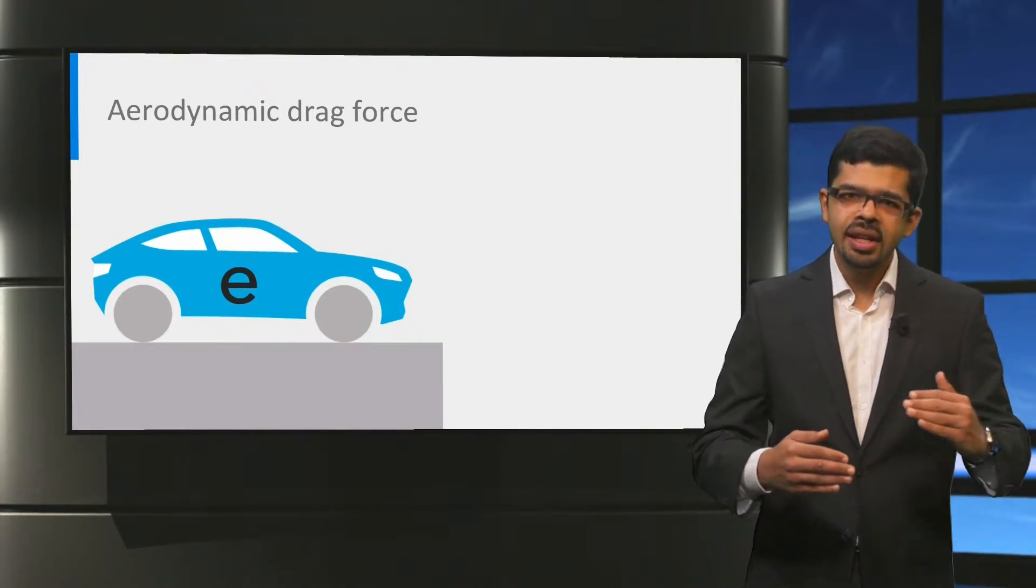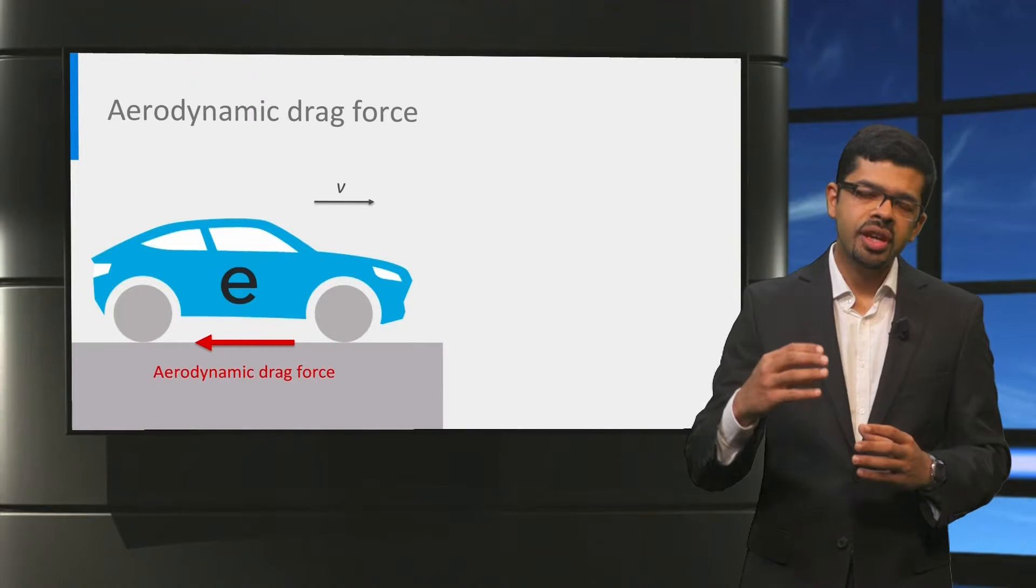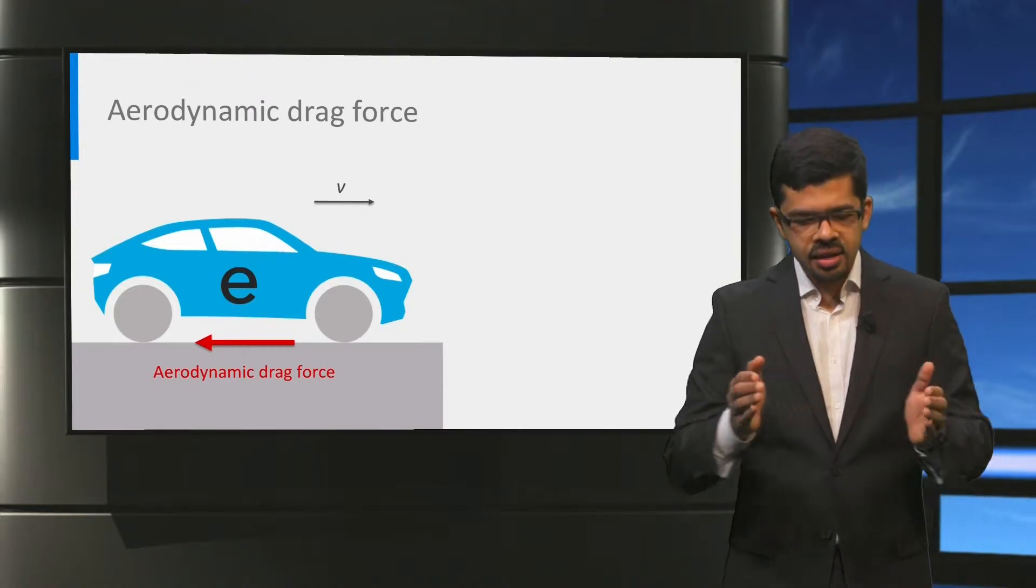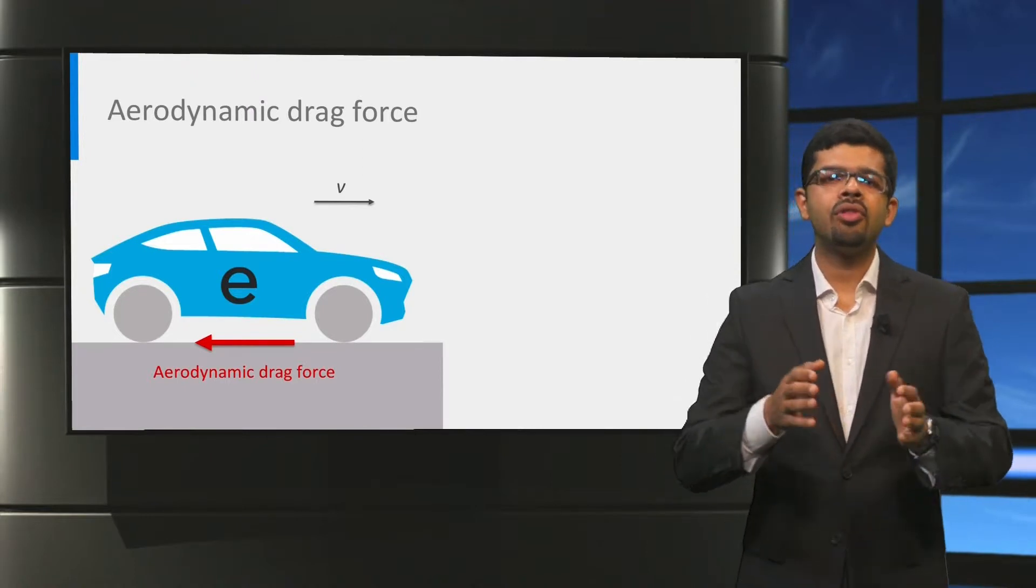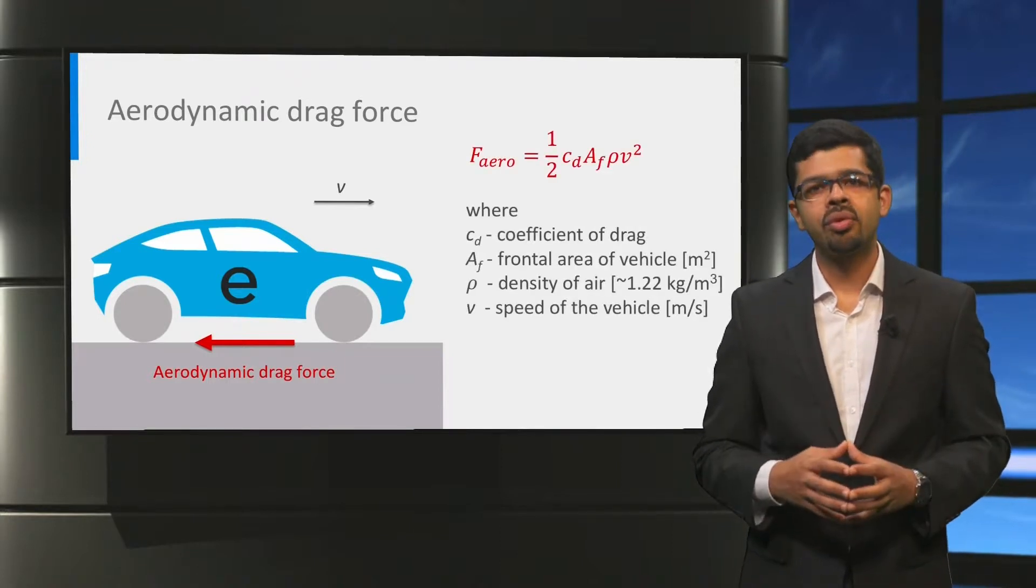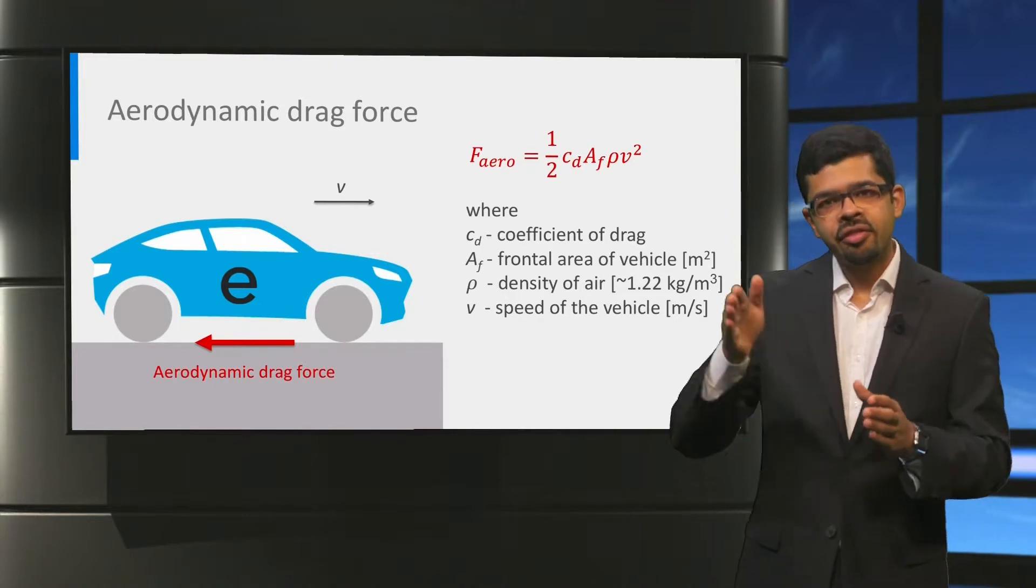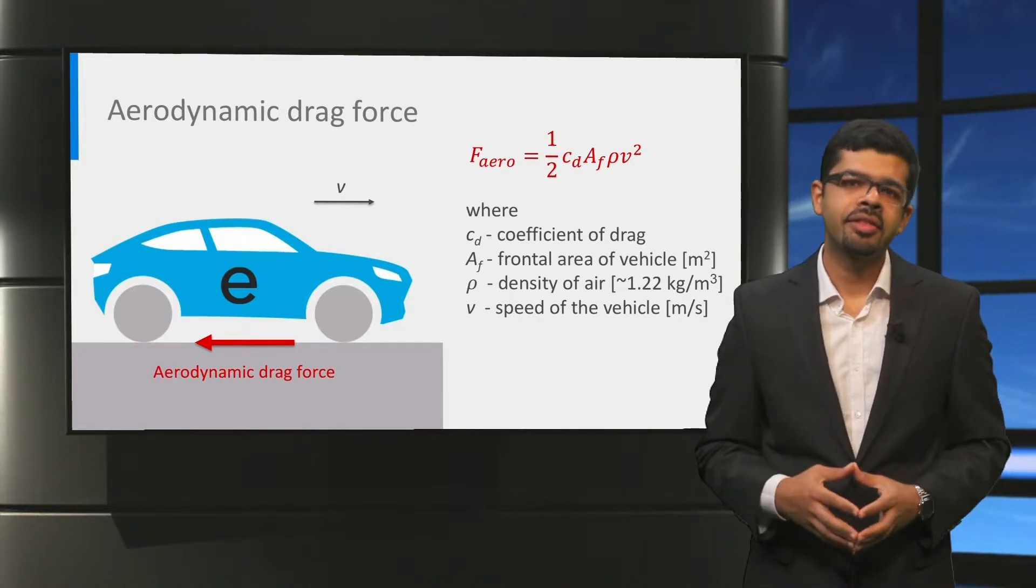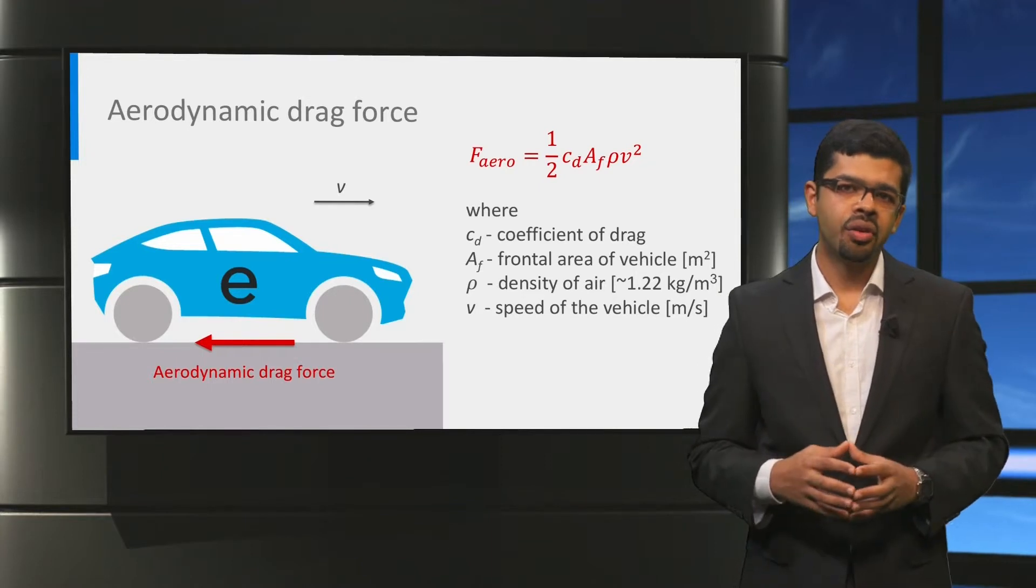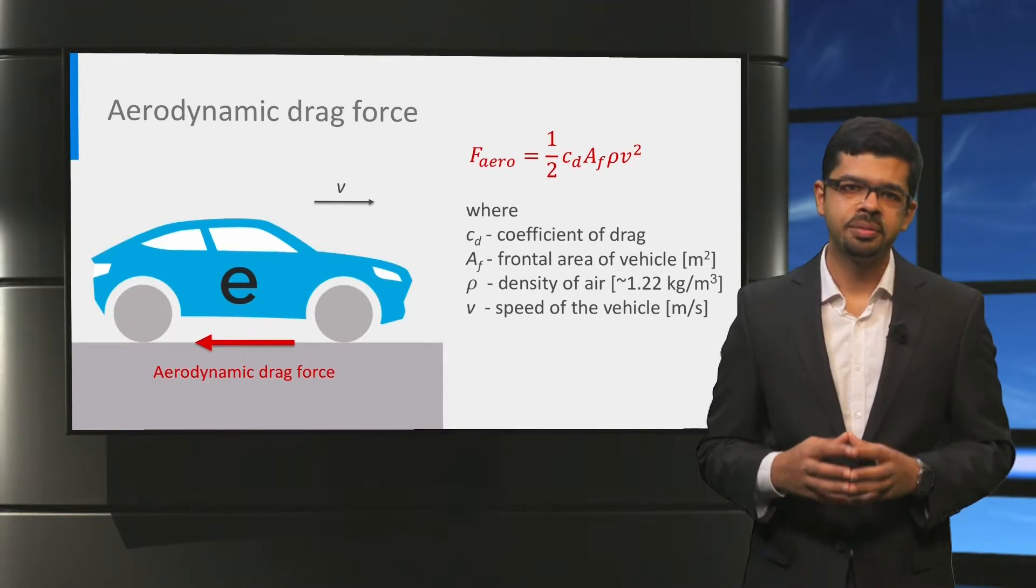As the vehicle speed increases, the aerodynamic drag force opposes the vehicle motion, as the air is forced to move and flow around the vehicle. It can be calculated as the product of the aerodynamic drag coefficient, cd, the frontal area of the vehicle, af, the air density, ρ, and the square of the vehicle speed, v, the entire expression divided by 2.